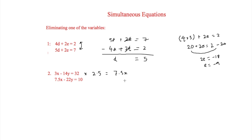Multiplying through by 2.5: minus 14 times 2.5 gives minus 35y, and 32 times 2.5 equals 80. Now it looks much easier as we have 7.5x on both equations. We subtract: 7.5x minus 22y equals 10 (the bottom equation stays the same).